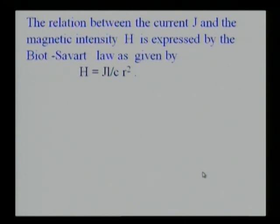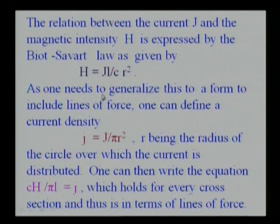The relation between the current J and the magnetic intensity H is expressed by the well-known Biot-Savart law, given by H equals J times L by C r squared, L being the length of the loop. As one needs to generalize this to a form to include lines of force, one can define a current density J, which is J upon π r squared, this being the area, r being the radius of the circle over which the current is distributed.